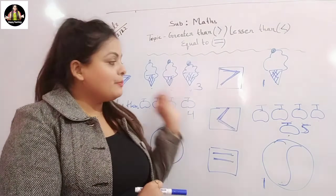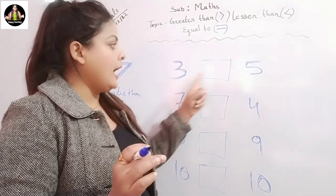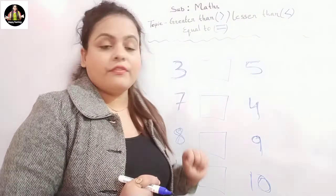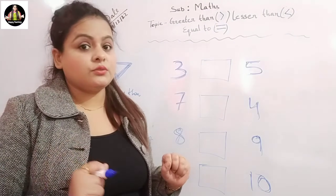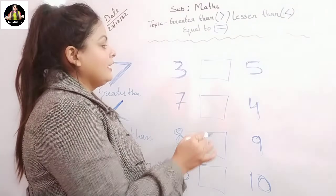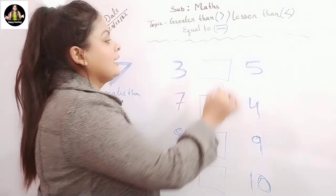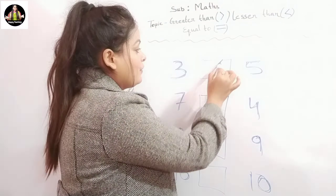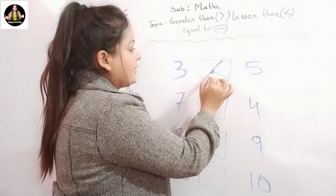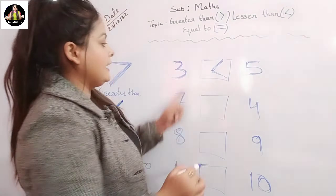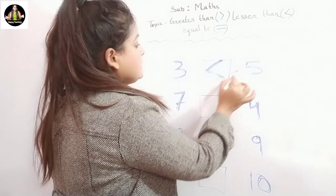Are you all ready? Now here we have three and this side we have five. Tell me which one is greater and which one is smaller — three or five? Which one is bigger? Correct — five! So we will give the greater than sign; the alligator will open his mouth towards this side.